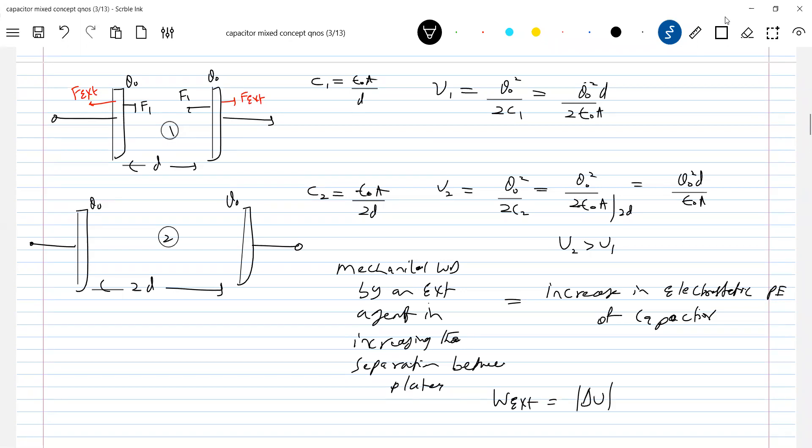So, in books, what happens, they put mod of delta U. U2 minus U1, calculate here. So, how much it is, should be equal to? Q squared D by 2A ε0.